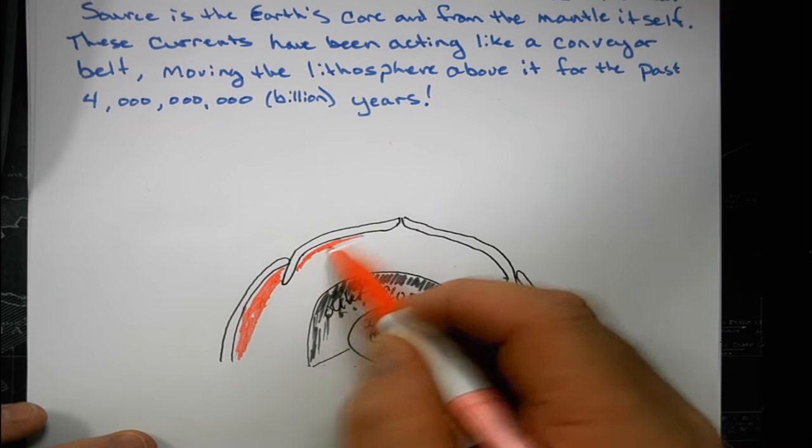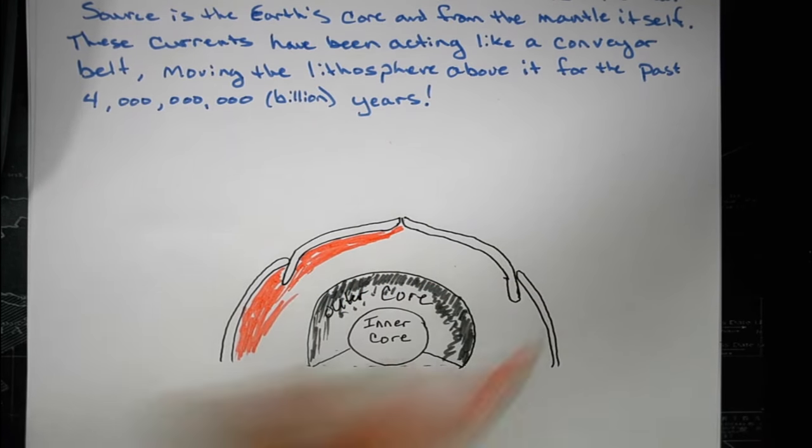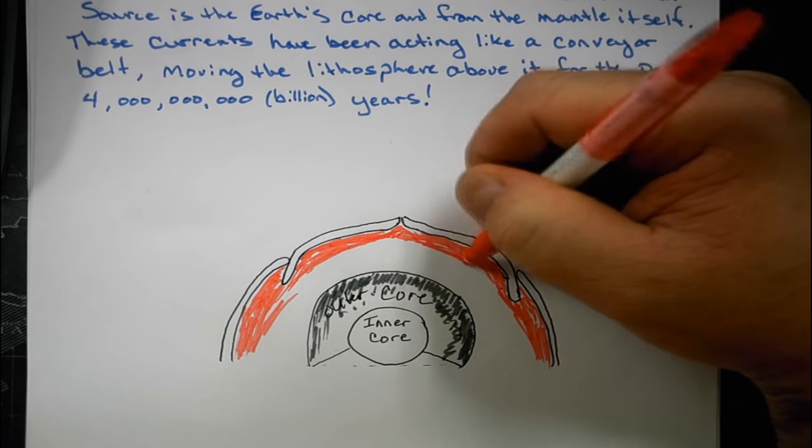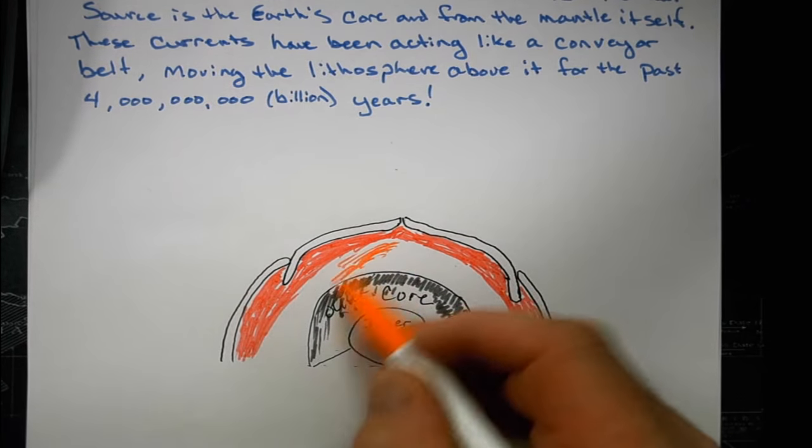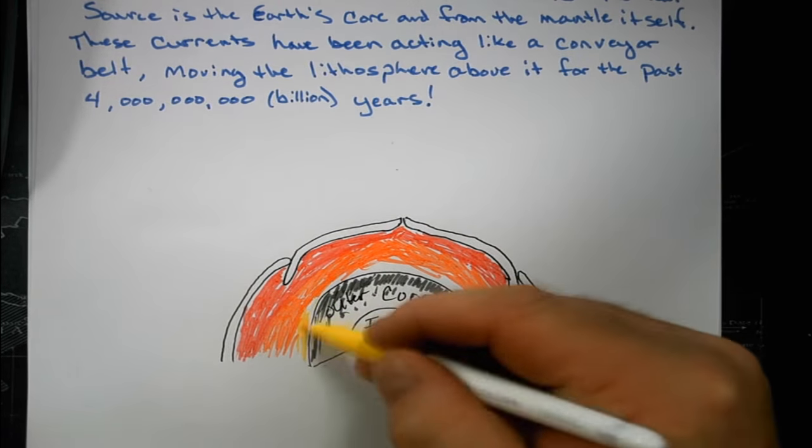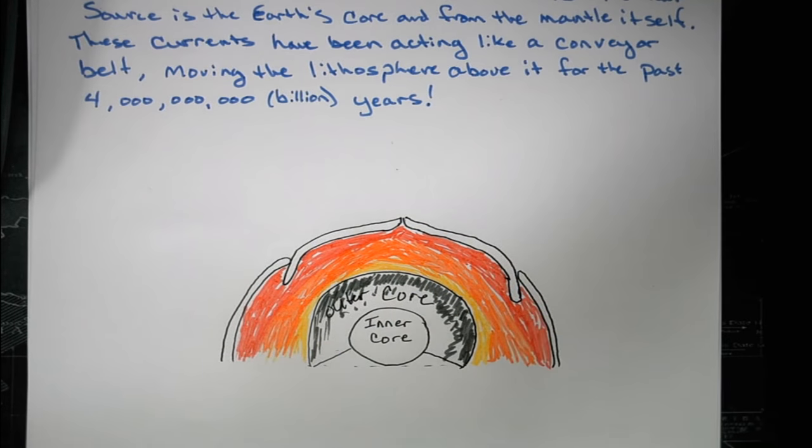And so what's in between is the mantle. The mantle has different layers of temperature to it. Because it has different layers of temperature, the rock itself expands and contracts as it moves from the core out to the outer mantle. When it does that, we create our convection currents.